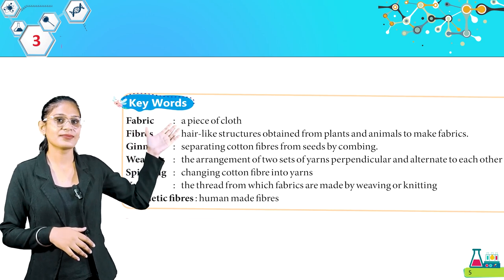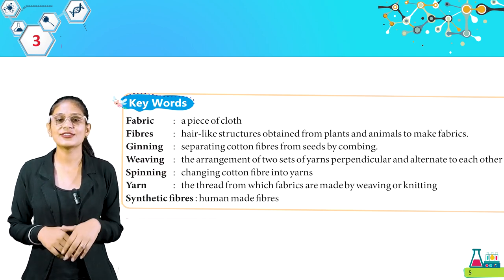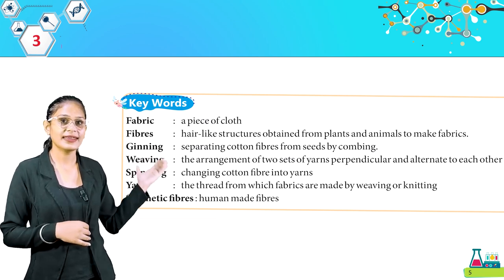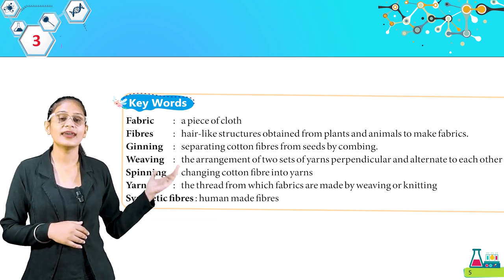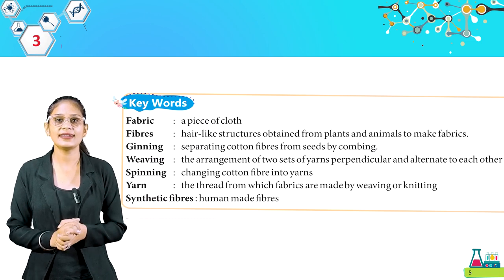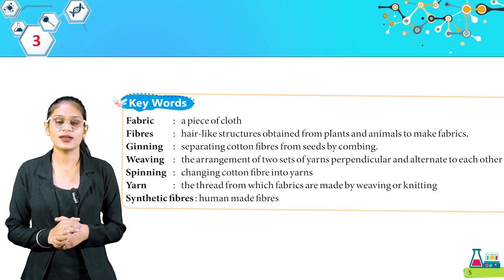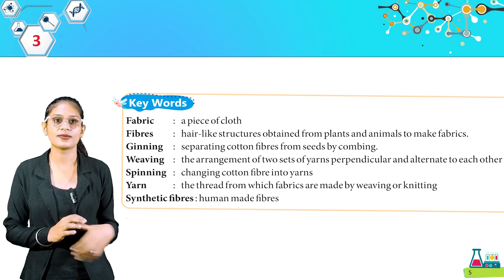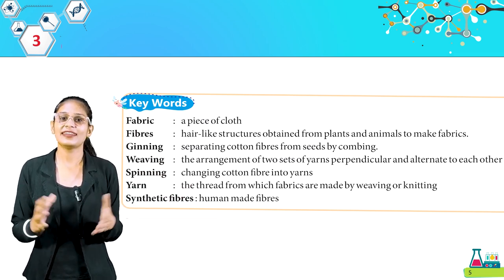Here are some keywords. Fabric: a piece of cloth. Fibers: hair-like structures obtained from plants and animals to make fabrics. Ginning: separating cotton fibers from seeds by combing. Weaving: the arrangement of two sets of yarns perpendicular and alternate to each other. Spinning: changing cotton fiber into yarns. Yarn: the thread from which fabrics are made by weaving or knitting. Synthetic fibers: human-made fibers. Thank you, students.